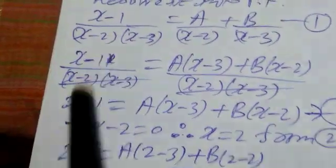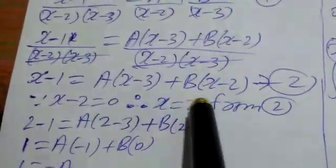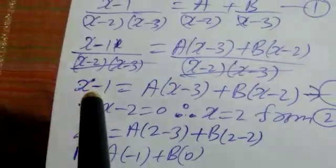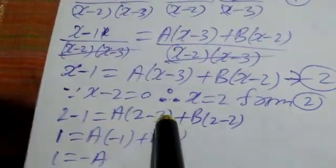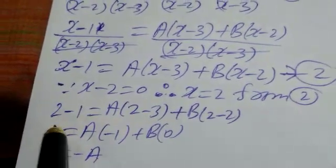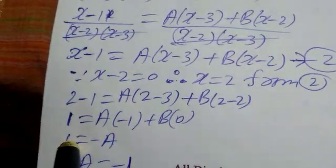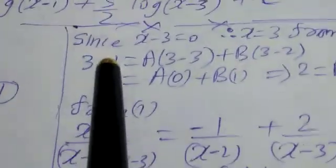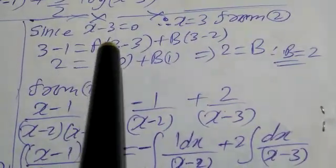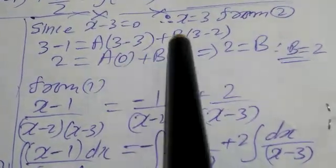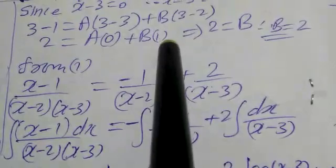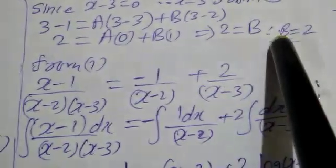Since (x minus 2) is equal to 0, therefore x is equal to 2. From equation 2: 2 minus 1 equals A into (2 minus 3) plus B into (2 minus 2), so 1 equals minus A. Therefore A is minus 1. Since (x minus 3) is equal to 0, therefore x is equal to 3. From equation 2: 3 minus 1 equals A into 0 plus B into (3 minus 2), so 2 equals B. Therefore B is 2.